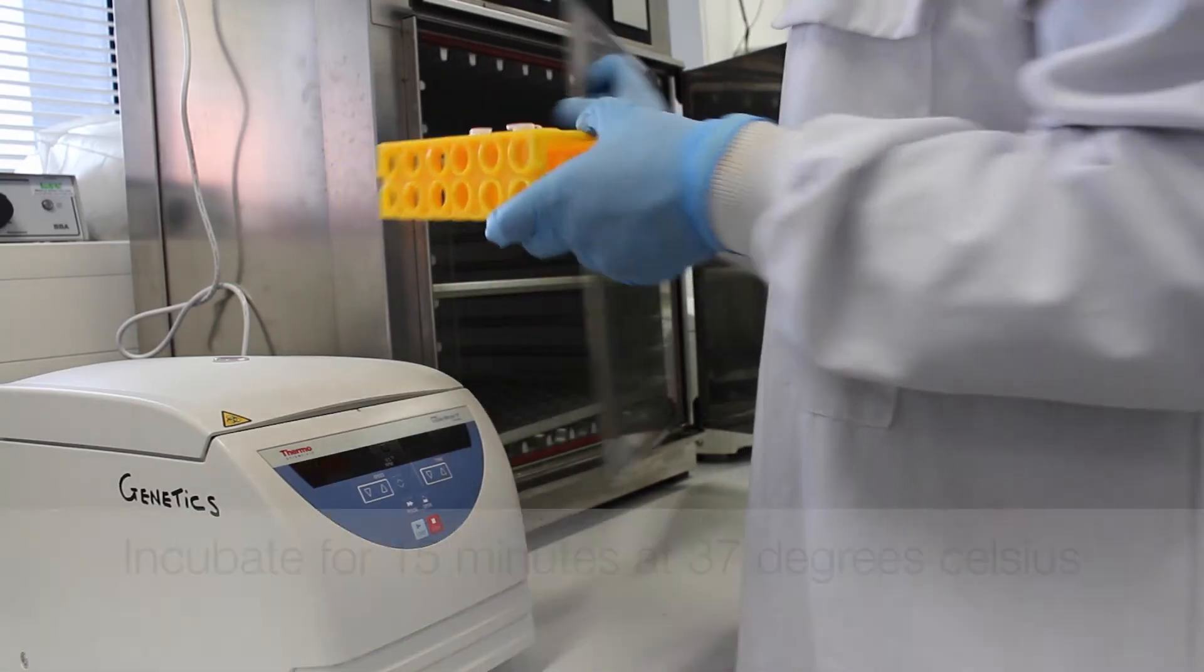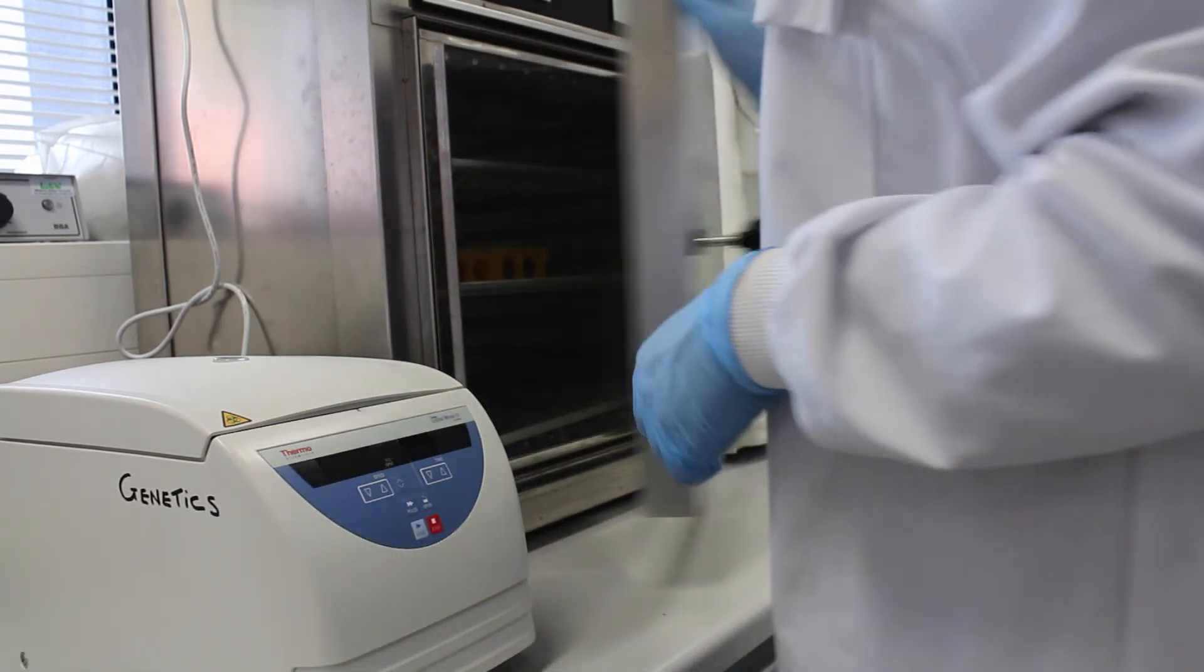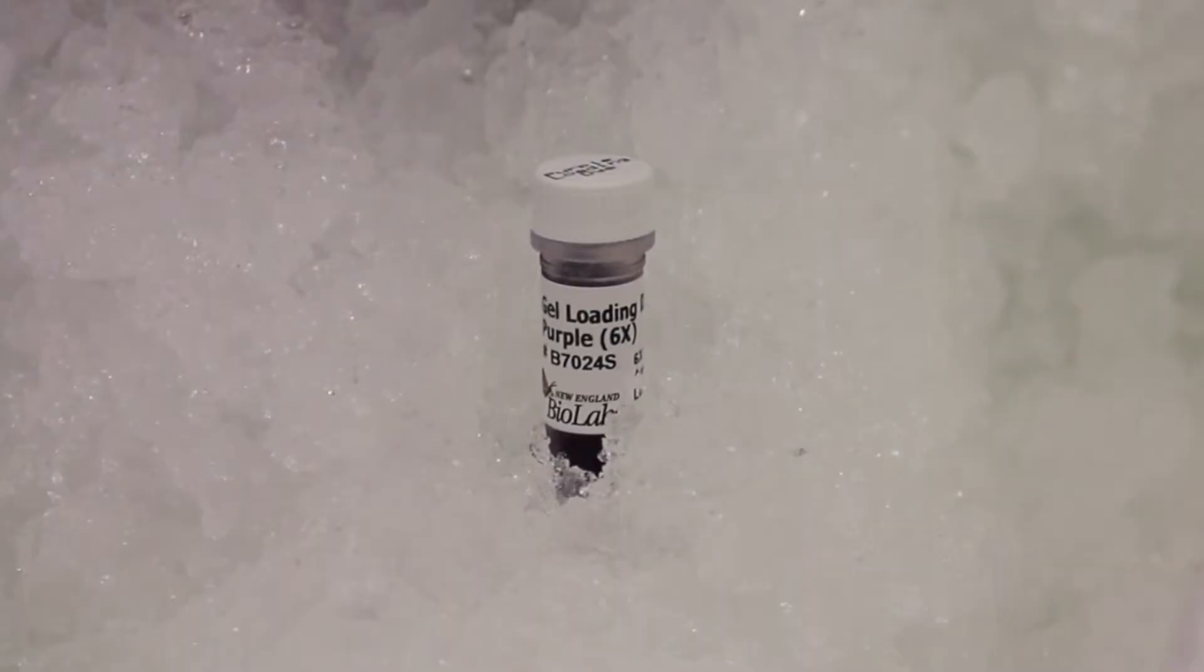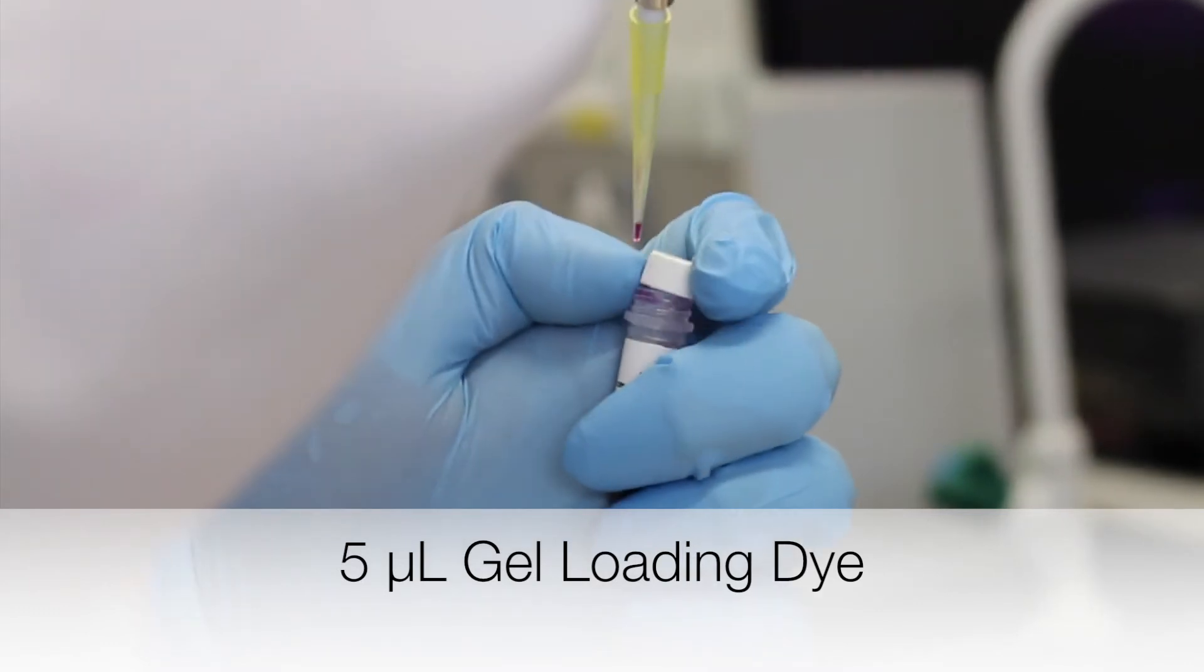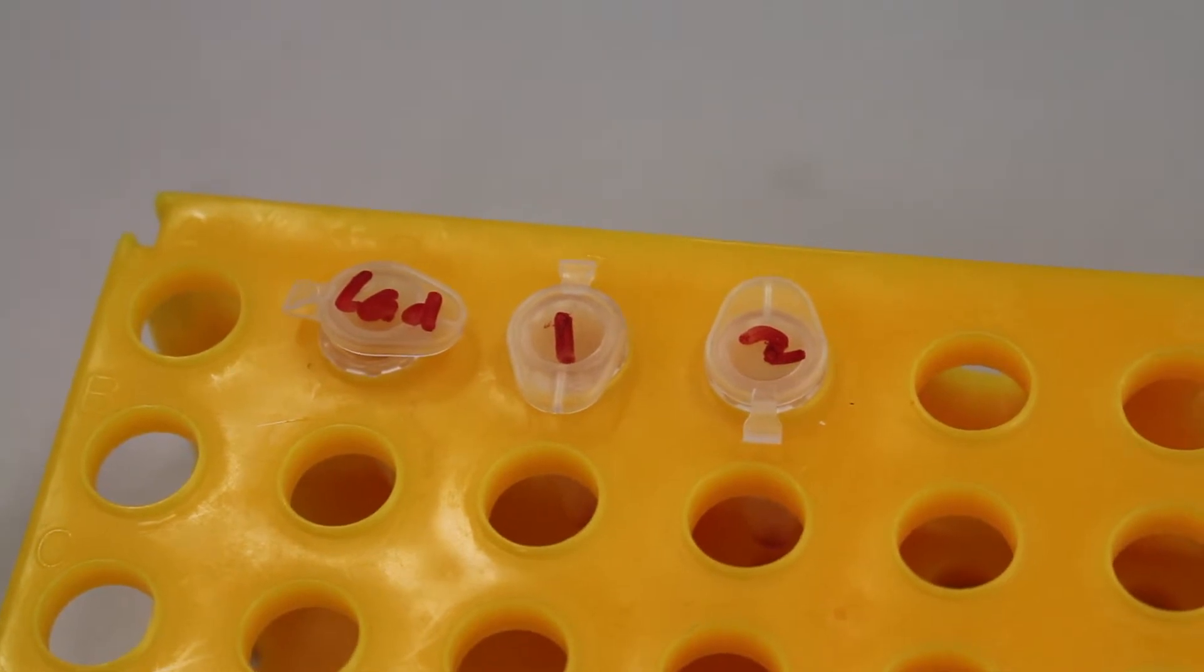The samples are left to incubate for around 15 minutes at 37 degrees Celsius. 10 microliters of DNA ladder is added to a separate Eppendorf tube. After the samples are removed from the incubator, 5 microliters of gel loading dye is added to each sample. Make sure that each tube is properly labeled. The samples are ready to be run on the gel.